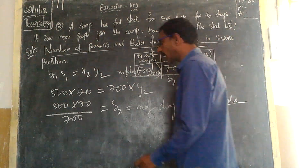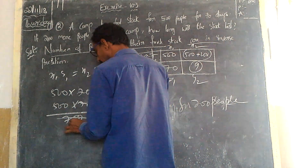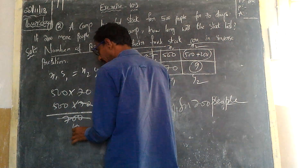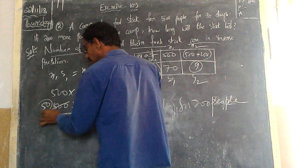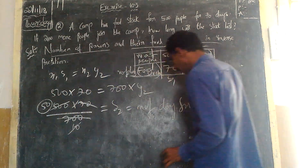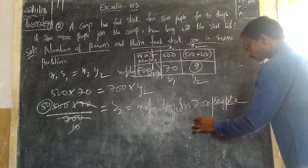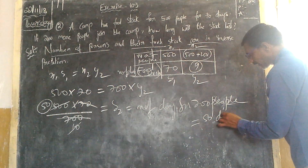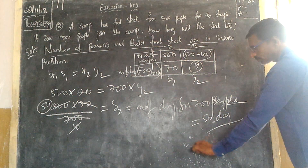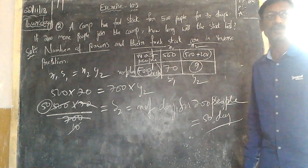770 divided — 10 is involved. 10 is involved, giving 50. It's about 50 days. 50 days. That's about 700.